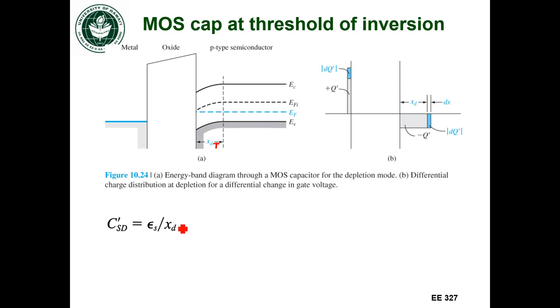The capacitance of my space charge region will be given by that. And we know that at the threshold of inversion, that's the maximum space charge width that I'm going to get. That's what that capital T is there for.